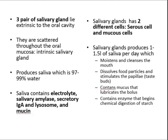Saliva functions to moisten and clean the mouth. It dissolves food particles and stimulates the papillae, which are the taste buds. It contains mucus that lubricates the bolus and contains enzymes that begin chemical digestion of starch. The three salivary glands are the parotid glands, the submandibular glands, and the sublingual glands.